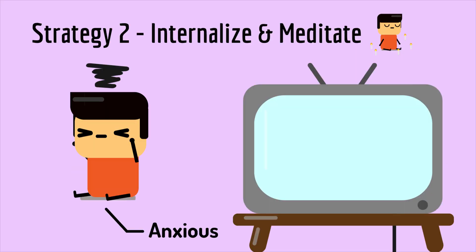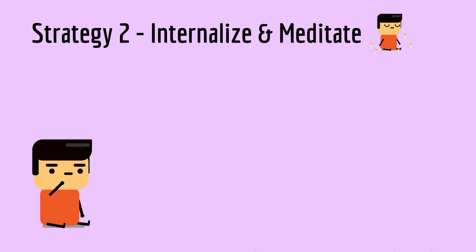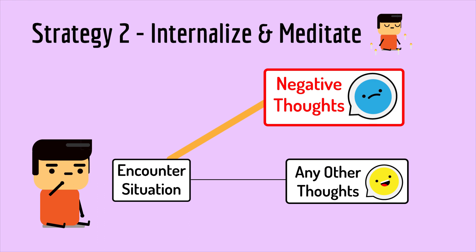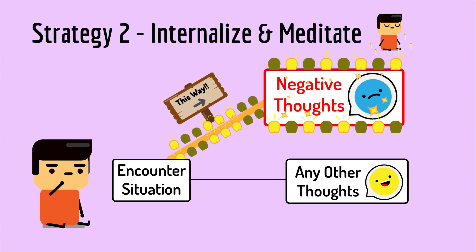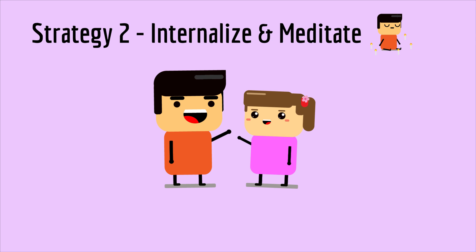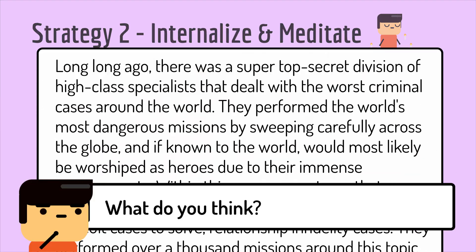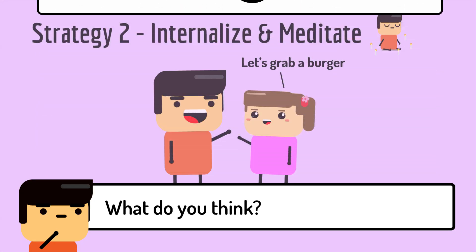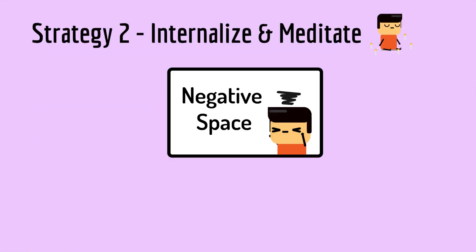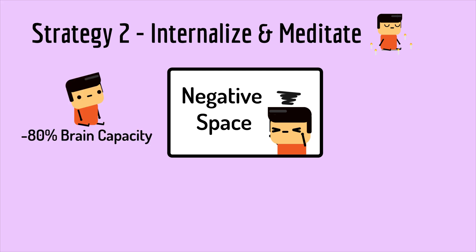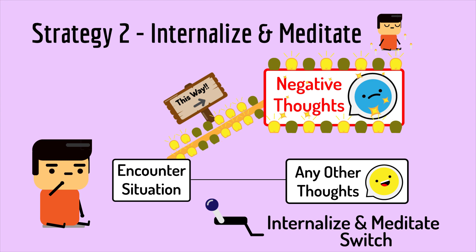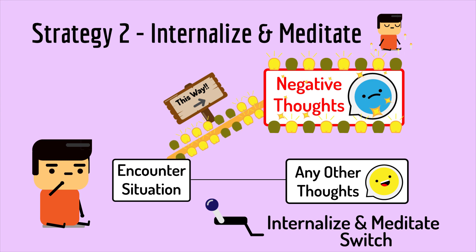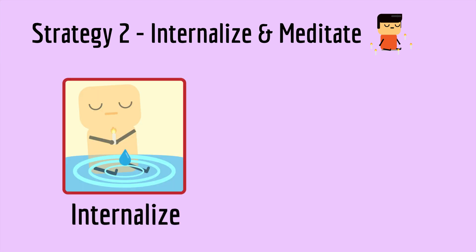Another strategy is what I call "internalize and meditate" — especially when I find myself anxious and restless over things outside my control. Whenever we encounter a situation, it's very easy to get trapped in our mind's activated thinking, automatically assuming the worst-case scenario along with the anger, sadness, and suffering that comes with it. This is especially apparent in relationships — as soon as something happens, our minds go on a journey of their own and we end up thinking we're being cheated on.